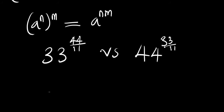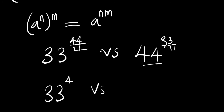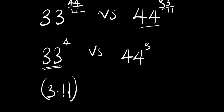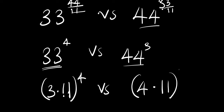Now, 44 divided by 11 is simply 4, and 33 divided by 11 is simply 3. So we have 33 raised to the power of 4, versus 44 raised to the power of 3. We can then rewrite 33 as 3 times 11, and 44 as 4 times 11. So we have (3 times 11) raised to the power of 4, versus (4 times 11) raised to the power of 3.